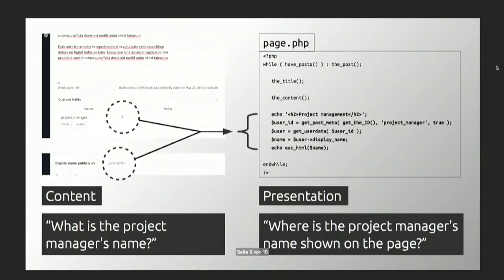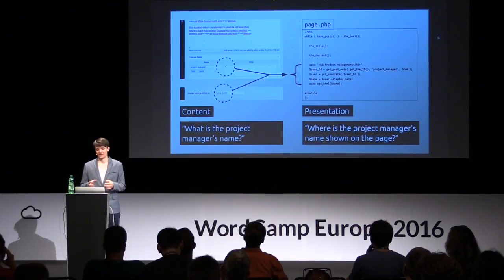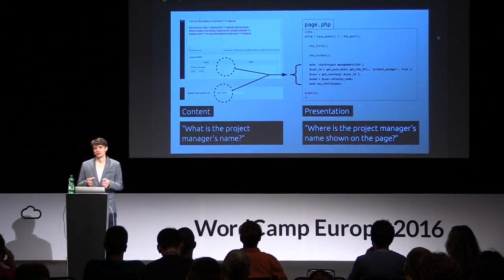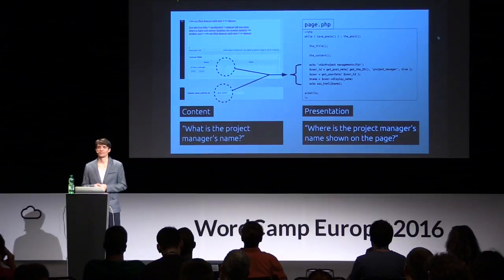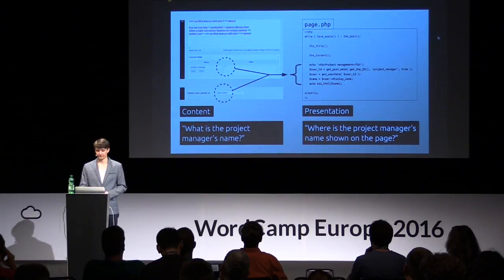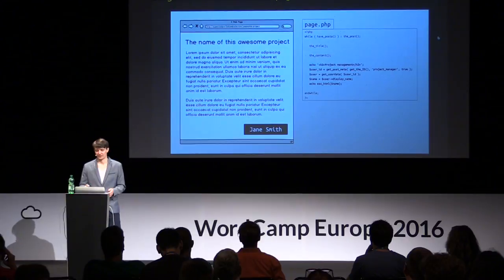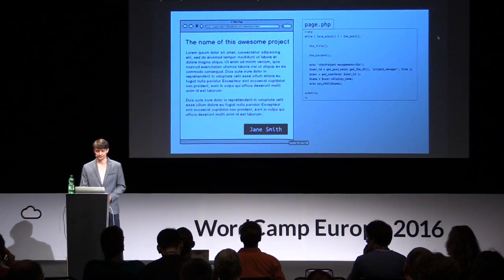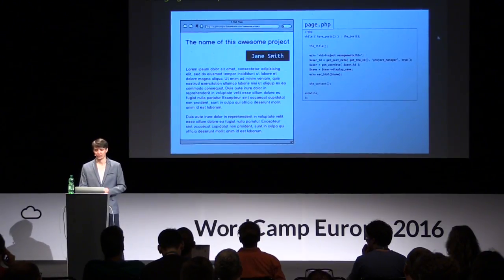So what if instead of using a shortcode, we added the reference to the project manager — or the WordPress user in that case — as a custom field or post metadata to the project page? By doing so, we can hand over the job of outputting the name at the right spot to our template. And now we have separated the content — what is the project manager's name — from the presentation — where is the project manager's name shown on the page? And once the position is defined in the template, we can also easily move the name for all the pages just by changing our template, and it automatically updates on all the project pages without any manual work.